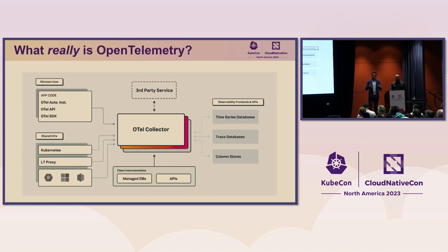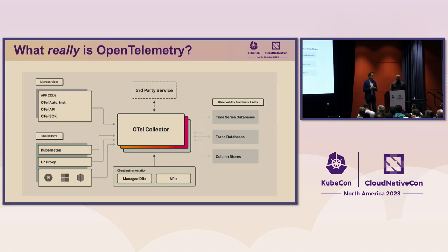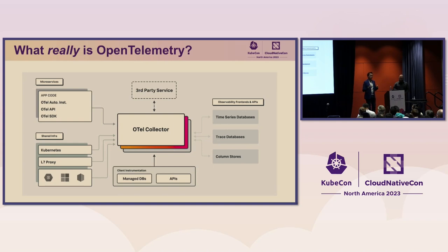The most used component of OpenTelemetry is probably the OpenTelemetry Collector. This is typically deployed as an agent on each host — on Windows, Linux, or onto Kubernetes clusters. The collector captures logs, system metrics like CPU and memory consumption, and metrics from third-party applications you might be running, such as databases and message queues — things where you didn't write the code but you deployed it.